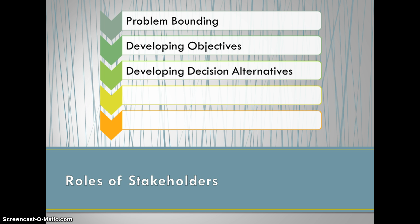Third, stakeholders play a role in developing decision alternatives. The outcomes of these alternative actions should be distinguishable from each other — not merely a series of tweaked alternatives, but a full range of well-defined actions.